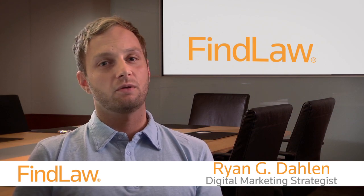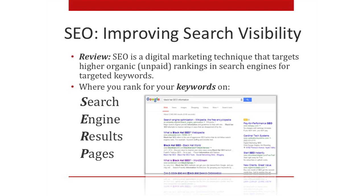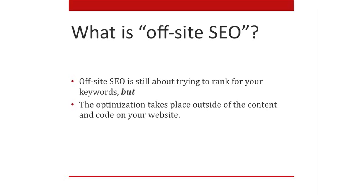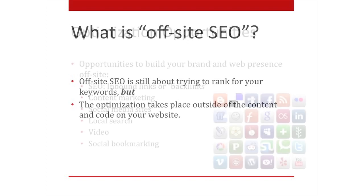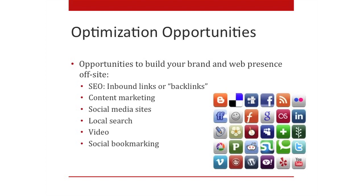What is SEO? It's all about improving organic search visibility. Organic means unpaid — it's where you rank for your keywords on search engine results pages. Off-site SEO is still about trying to rank for those keywords, but the optimization takes place outside of the content and code on your website. Opportunities to build your brand off-site include inbound links or backlinks, content marketing, social media, local search, video, and social bookmarking.